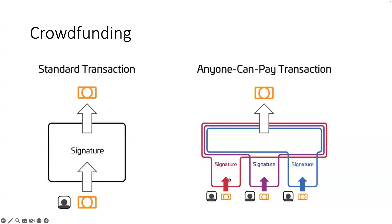Without ANYONE_CAN_PAY, after Bob adds his input the original message changes, so Alice's original signature would become invalid. This is the key point — the difference between whether you use ANYONE_CAN_PAY or not. If Alice didn't use ANYONE_CAN_PAY, once Bob adds his input the transaction's inputs change and Alice's signature becomes invalid.